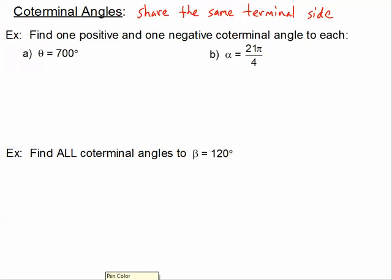So I'm going to ask you to find one positive coterminal angle and one negative coterminal angle to the given one. So we've got 700 degrees. That's a pretty big angle.